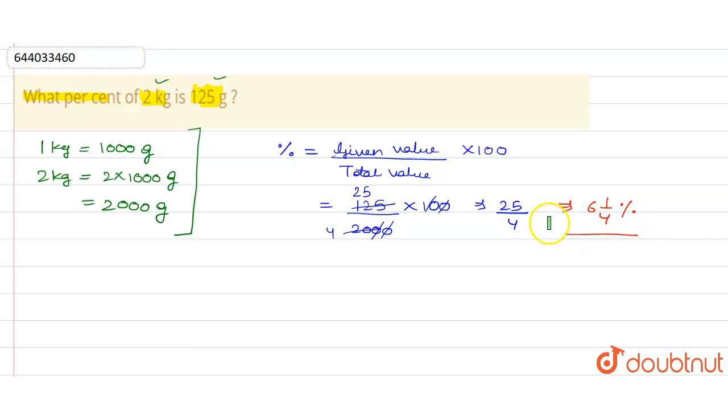So 125 grams is 6 and 1/4 percent of 2 kg. Therefore, 6 and 1/4 percent is the final answer.